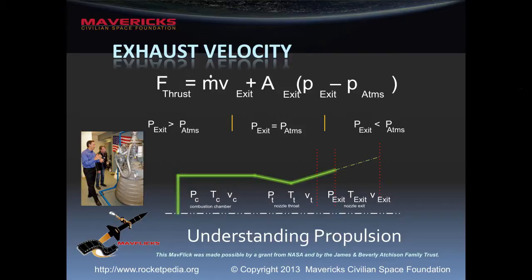I thought it would be good to provide a photo of what a nozzle looks like rather than just this symbolic picture of half the rocket motor. We'll get into all this and hopefully tie it all together, and when we're done you'll have a really good understanding of exhaust velocity, what it's really doing inside of your rocket and in your rocket nozzle, and how it's going to affect the performance of your vehicle, particularly as the rocket leaves Earth and starts to travel out into space.